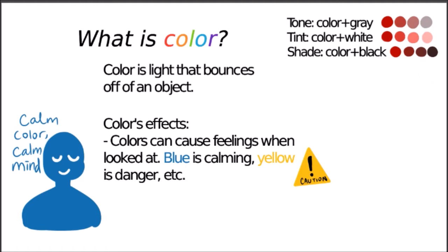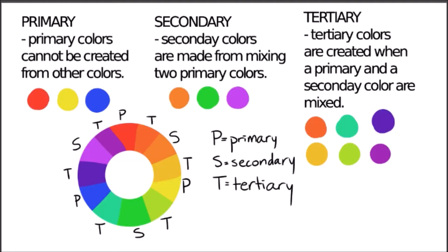Shade is the color plus black, so it becomes darker. Primary colors cannot be created from other colors — which would be red, yellow, and blue. Secondary colors are made from mixing two primary colors, so red and yellow make orange, and yellow and blue make green.